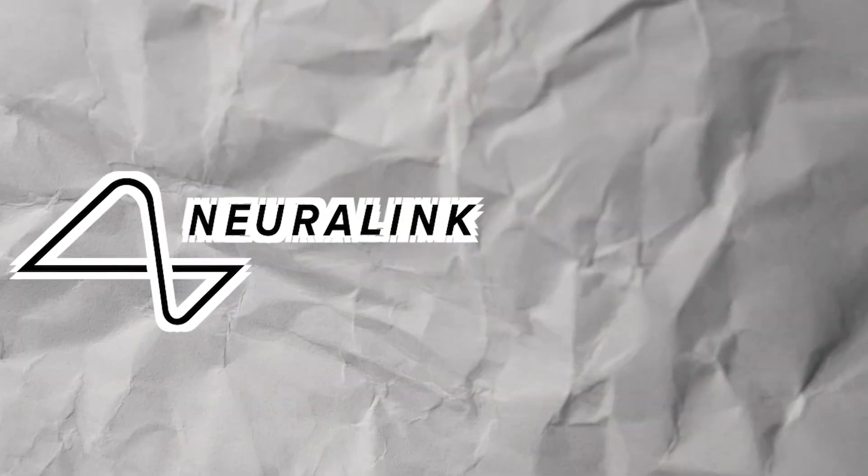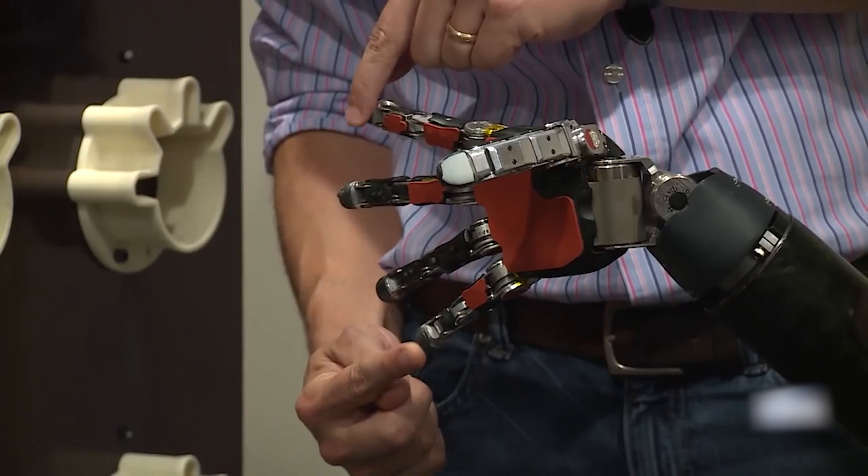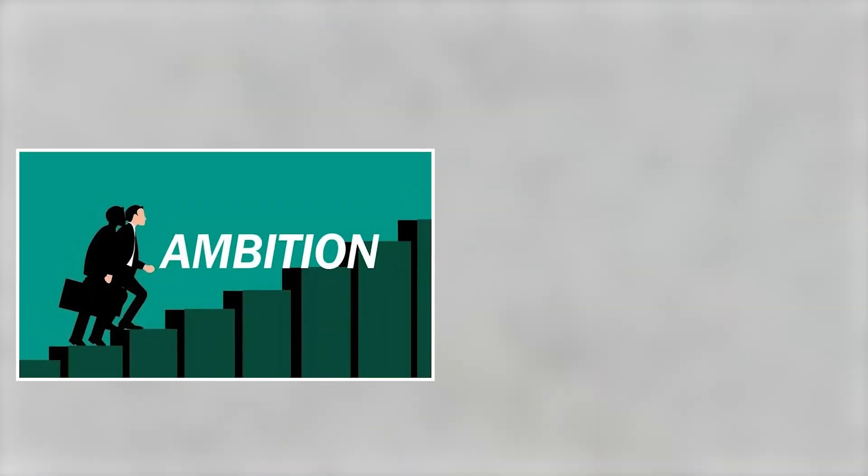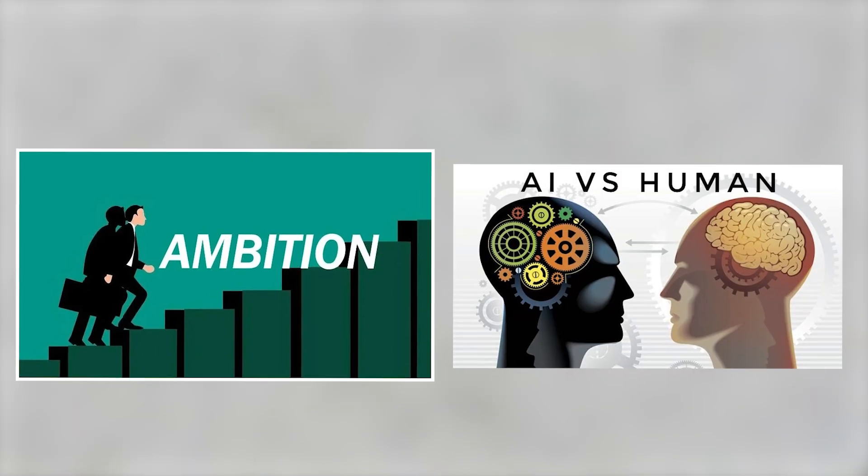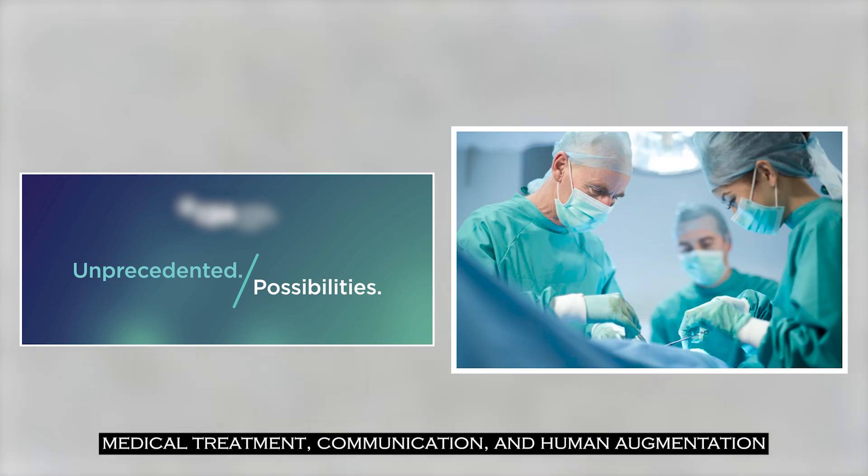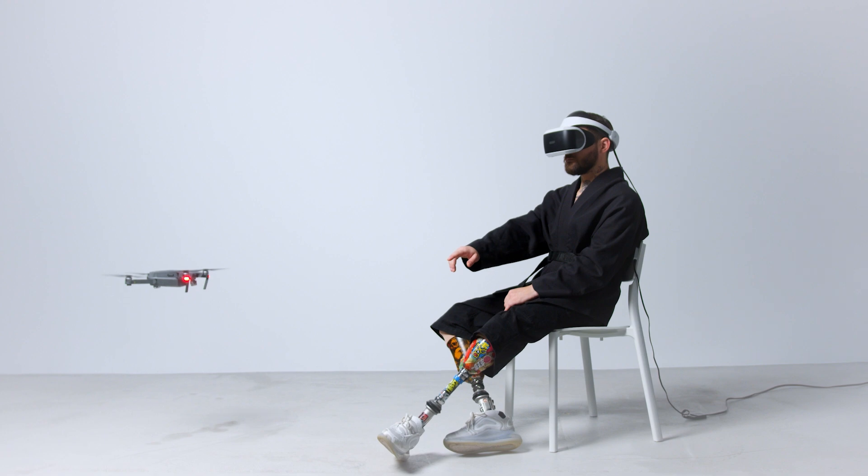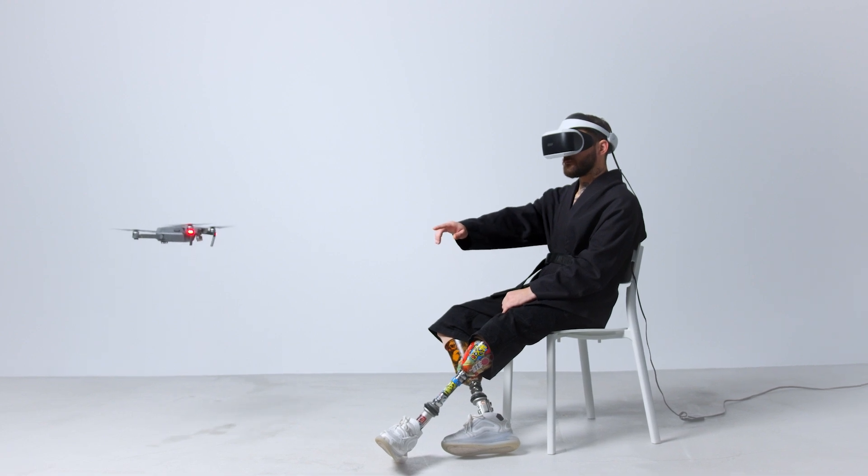As terrifying and surprising it sounds, Neuralink, founded by Elon Musk, has embarked on the first-ever human trials of its revolutionary brain-machine interface technology. The ambitious venture aims to bridge the gap between the human brain and artificial intelligence, opening doors to unprecedented possibilities for medical treatment, communication, and human augmentation. It's indeed a groundbreaking leap towards merging technology with the human mind.